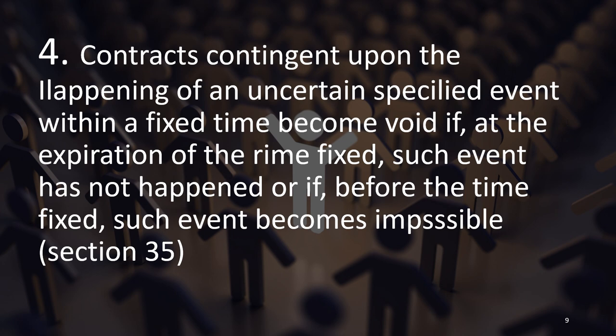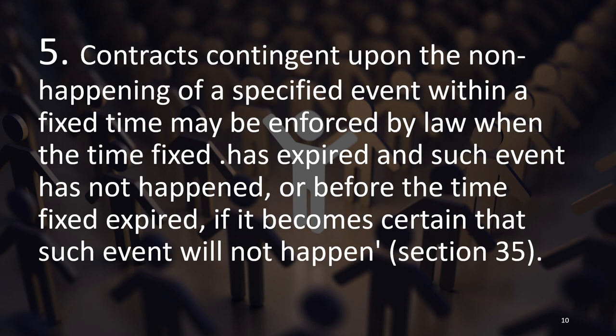Section 35 states: contracts contingent upon the happening of an uncertain specified event within a fixed time become void if, at the expiration of that fixed time, such event has not happened, or if before the time fixed such event becomes impossible. Similarly, contracts contingent upon the non-happening of a specified event within a fixed time may be enforced when the time has expired and the event has not happened, or if it becomes certain that the event will not happen.